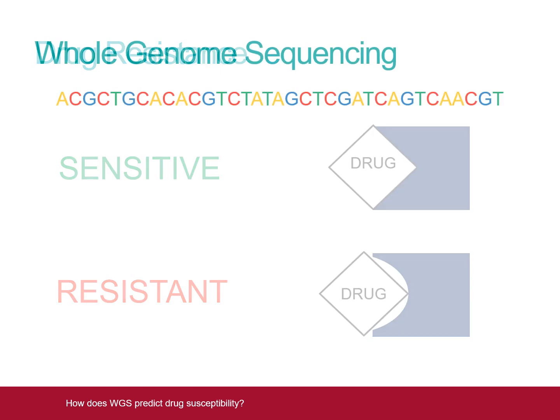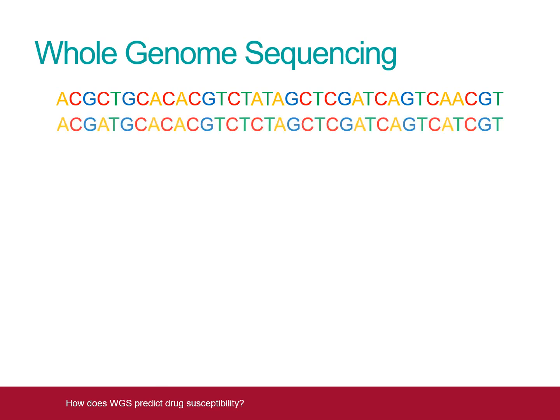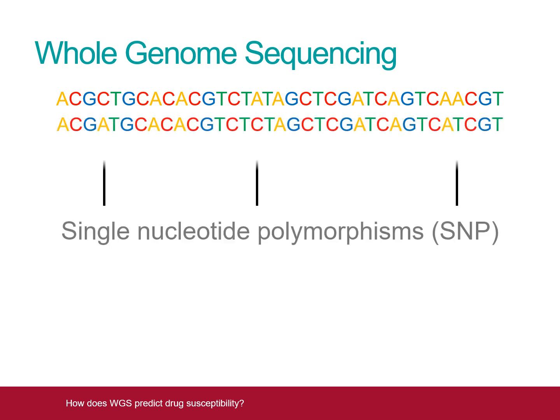The WGS system used by the NMRS looks for single nucleotide polymorphisms, also known as SNPs, in the genes that determine resistance to the drugs mentioned at the beginning of this video. If SNPs are found, they are compared to a database of known resistance-causing mutations.